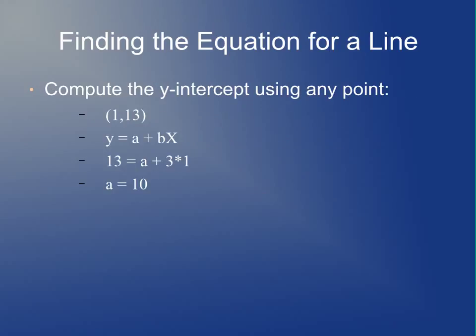Once you have the slope, you solve for the y-intercept using substitution. We know this line goes through the point (1, 13). So you plug in 13 for y and 1 for x, getting y equals a plus 3 times 1. Solving for a, you get the y-intercept a equals 10.